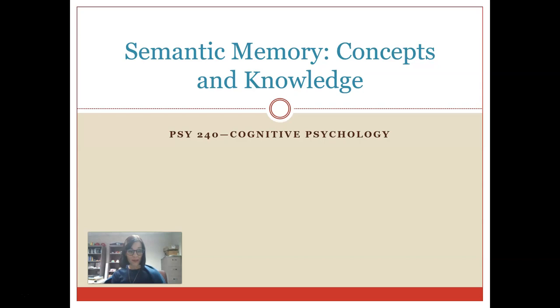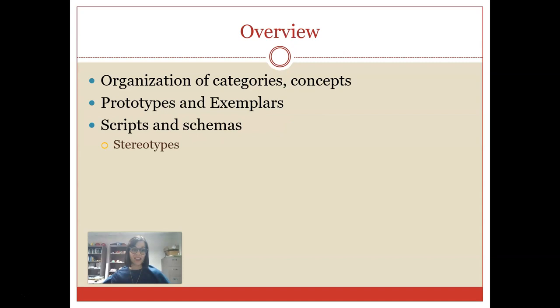We briefly need to talk a little bit about semantic memory, in particular, talking about things like concepts and knowledge. Initially, I'm probably going to talk about prototypes and exemplars, as well as scripts and schemas with you on Wednesday, but I did want to start by talking about how we organize different categories and how we organize different concepts in semantic memory.